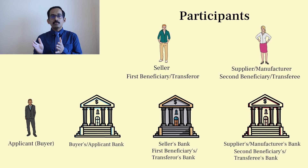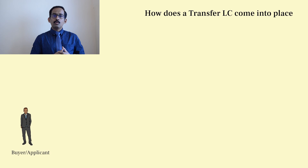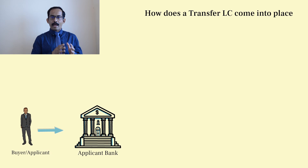Based on that, there can be more participants in a transferable LC. A transferable LC includes the applicant, applicant bank, first beneficiary, first beneficiary bank, second beneficiary, and second beneficiary bank. The second beneficiary cannot further transfer an LC that he has received.